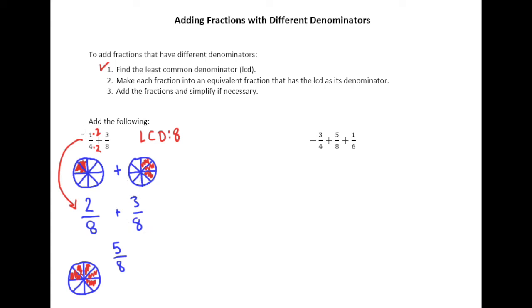We changed one-quarter into an equivalent fraction that had the LCD as the denominator, so we did that. Then of course we added them together to get five-eighths. We didn't have to do this in this particular problem, but of course we're going to simplify if necessary.